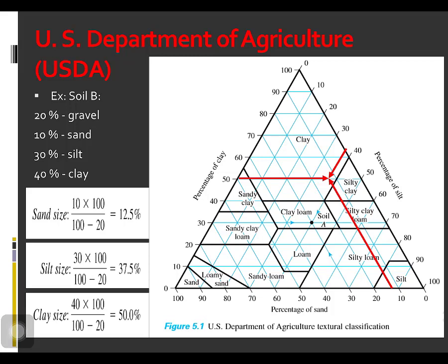The zone where the lines intersect is the soil classification. For this example, the soil is classified as gravelly clay because of the large amount of gravel that the soil contains.